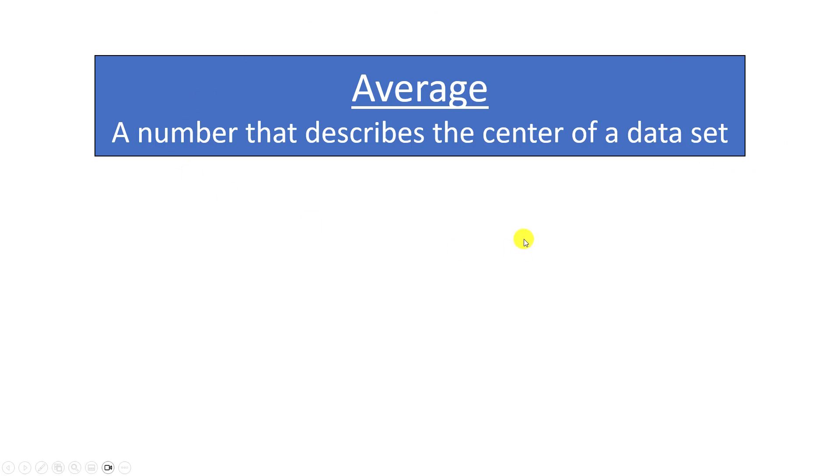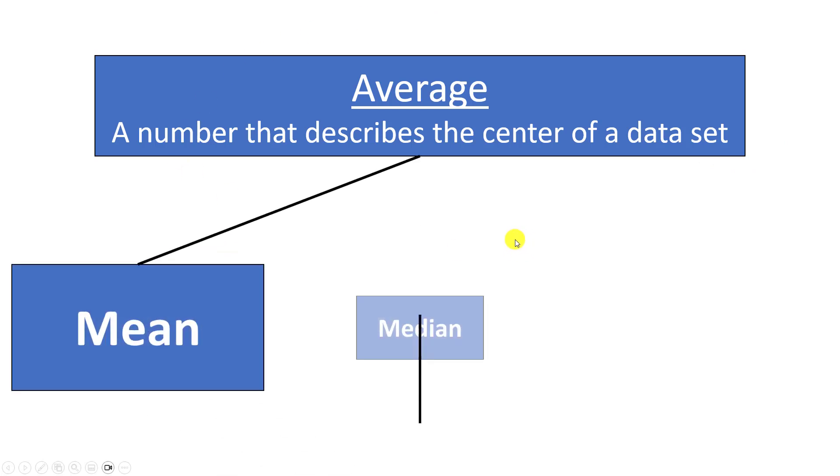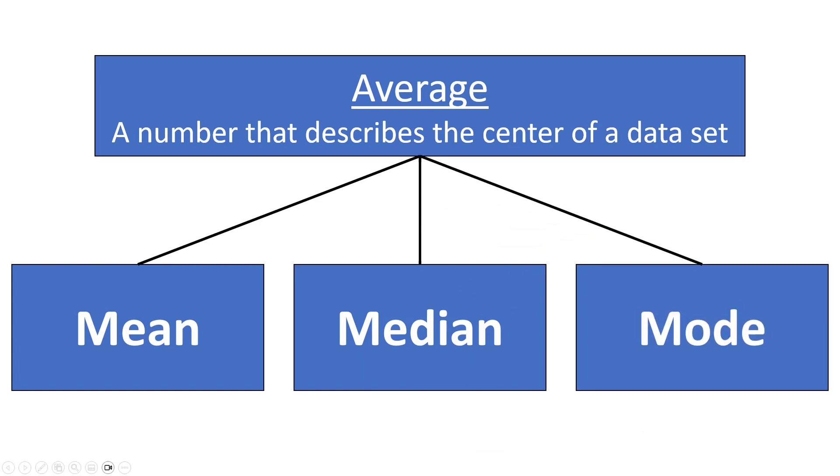There are many different things that you could calculate that would all be classified as an average. The three most common ones are the mean, the median, and the mode. Don't believe me? Let me show you.